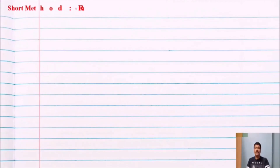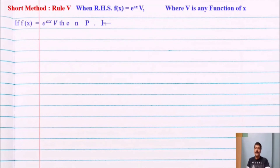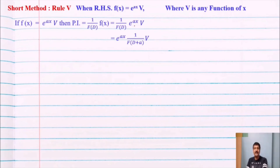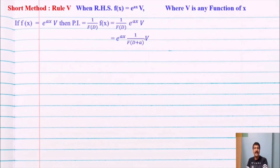Rule number five: when f(x) = e^(ax) · v, where v is some function of x. Rule one handles e^(ax) alone; rule five handles e^(ax) multiplied by a function v. The formula is: 1/f(D) operating on e^(ax)·v = e^(ax) · 1/f(D+a) operating on v. Every D in f(D) is replaced by D+a; then the remaining 1/f(D+a) on v may use rules 1–4.